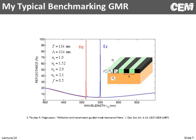This is the Guided Mode Resonance Filter that I always use to benchmark my codes. I don't think there's anything about this that makes it better than another one — I just am easily able to remember these numbers. We'll model this as a 2D structure, so there'll be an E Mode response and an H Mode response. Notice the background response is pretty constant — that's what you would model with Transfer Matrix Method — but it definitely does have a polarization response and it produces resonance at two different wavelengths.